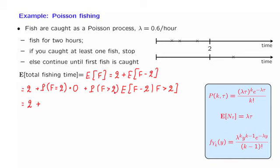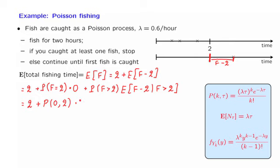The probability that you fish more than two time units is the probability that no fish were caught during the first two hours. Given that you didn't catch anything and will therefore continue fishing, the expected amount of additional time is the conditional expectation of F minus two. Since the Poisson process starts fresh at time two, the expected time until the first arrival is 1 over lambda.